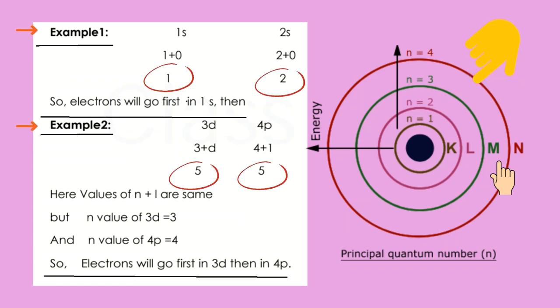Another example. n is number of shell, l for subshell. s equals 0, p equals 1, d equals 2, f equals 3.